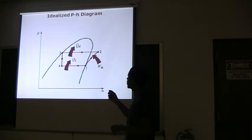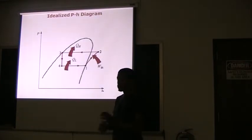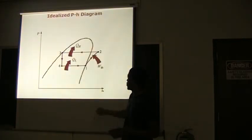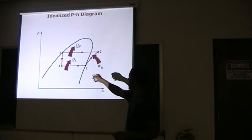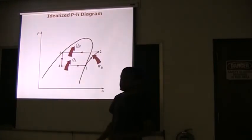Here's your idealized P-h diagram, and this process is the same as the one previously shown here. So you have your compressor from one to two, your condenser, your expansion, and then your evaporator at the bottom. And it shows how the pressure is related for this system.